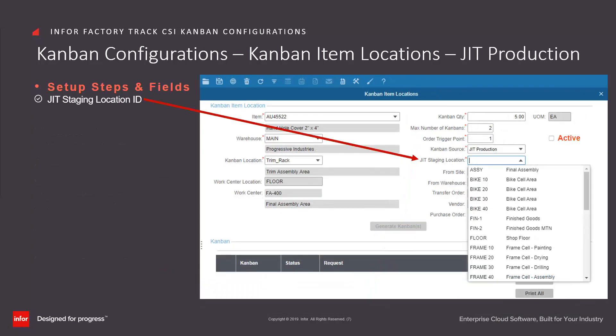For Kanban items where the Kanban source is JIT Production, the process is the same with the exception that a JIT staging location is required for entry or selection by drop-down. This is the location where the JIT Kanban items will be kept until ready to be moved to the Kanban location.